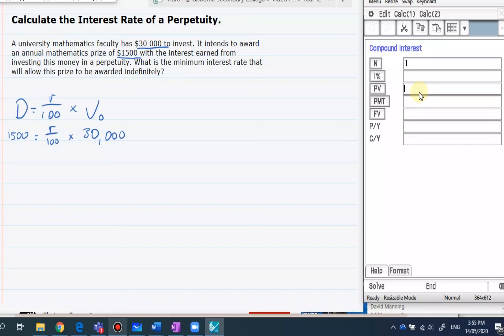The present value is we're investing $30,000. So we're giving the bank or financial institution $30,000. So that's what is coming out of our pocket. So it's negative. The payment we want to be paid so that we can give it away as a prize, $1,500.